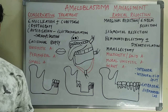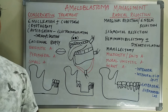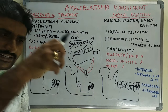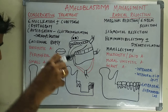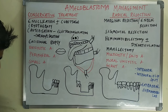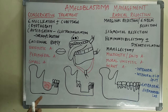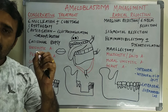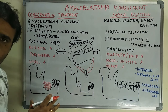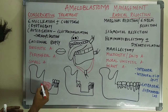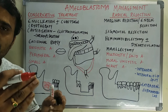The composition of Carnoy's solution is 60% ethanol, 30% chloroform, glacial acetic acid, and 1 gram of ferric chloride. This solution should be prepared freshly at the time of surgery. After preparing, dip a gauze in the solution and apply it to the defect area for at least 3 to 5 minutes. This chemical cauterization produces necrosis of the surrounding bony margins, thereby decreasing the chances of recurrence.